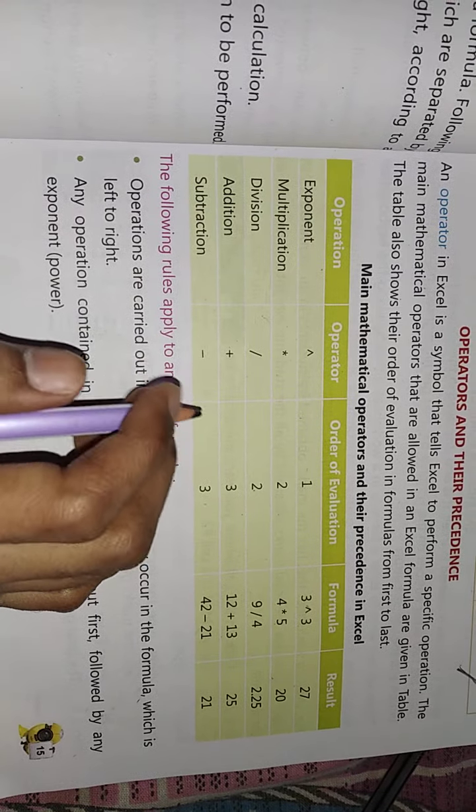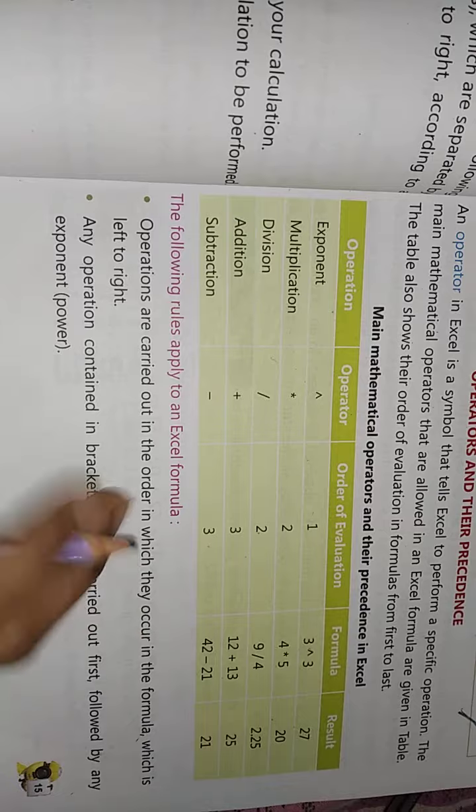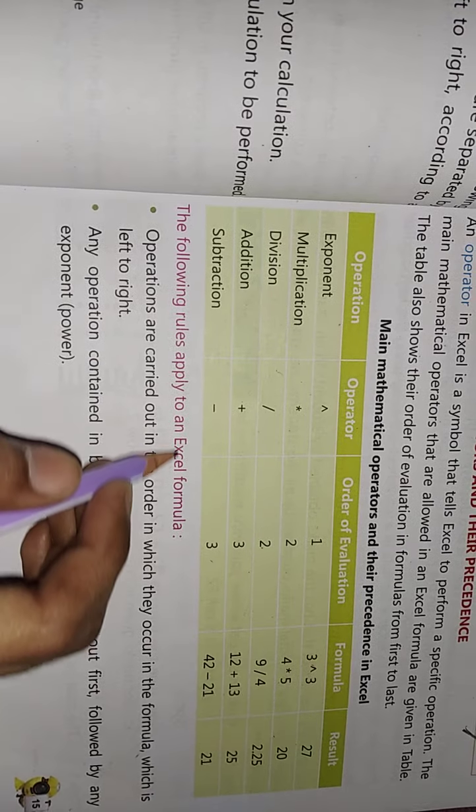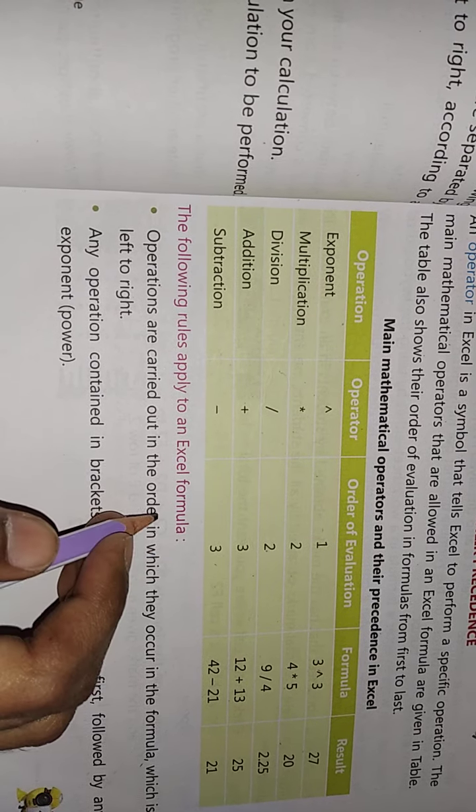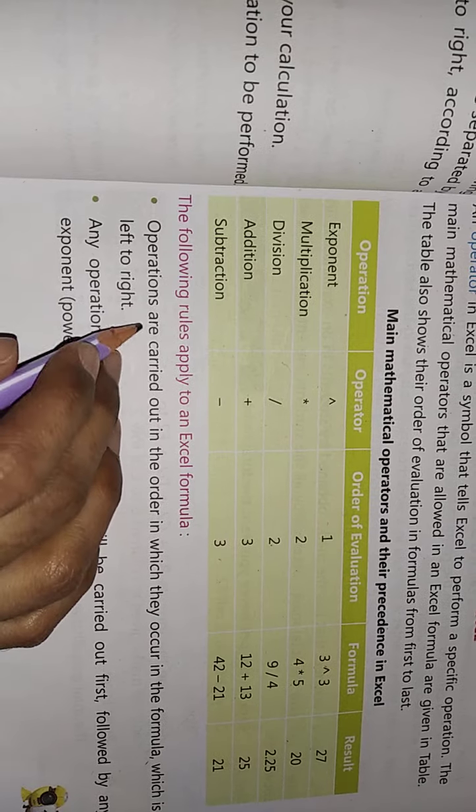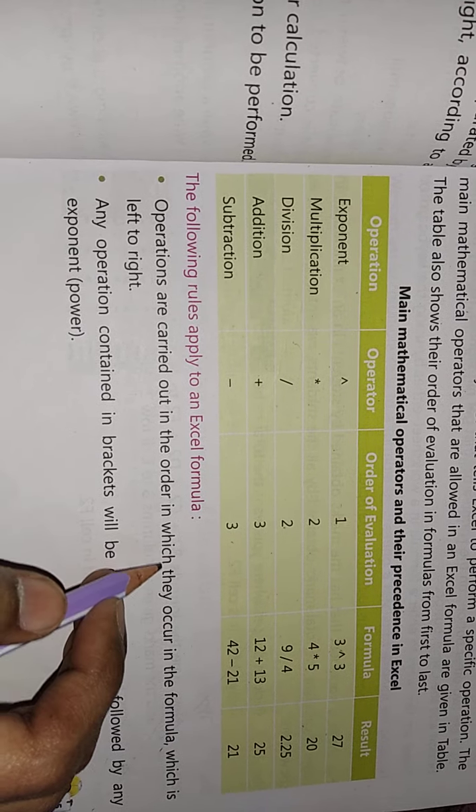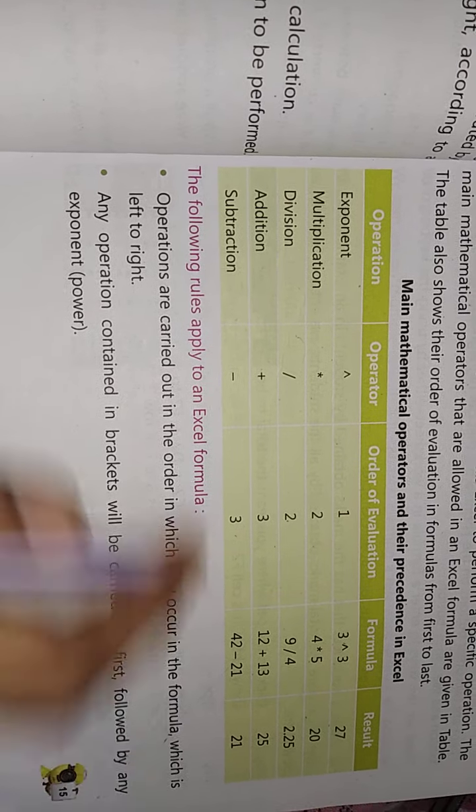Following rules apply to an Excel formula. First of all, operations are carried out in the order in which they occur in the formula, which is left to right.